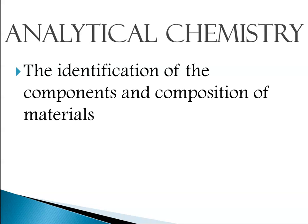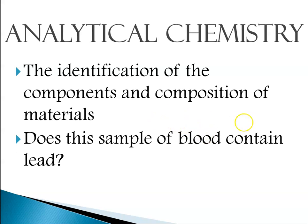In a blood sample, they might be looking for white blood cells, fats, red blood cells, platelets, and similar things. Analytical chemistry also asks: is there lead present in the blood? Are there contaminants? Is a particular drug present? All of those kinds of questions fall under analytical chemistry.